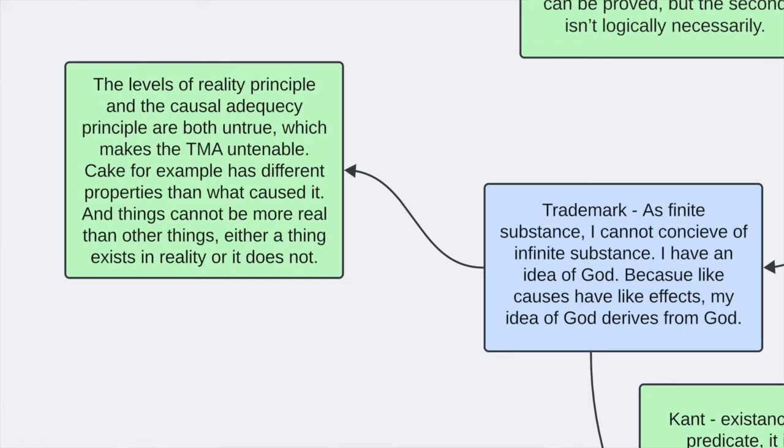And so that's one reason why the trademark argument doesn't work. The other reason is the idea of causal adjacency. And this is that like causes have like effects. Now we know this isn't true. A cake, for example, the component parts, the make of a cake have different properties to the cake itself. And so again, we can show that causal adjacency is wrong.